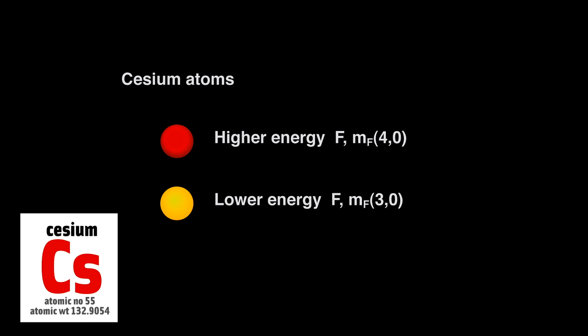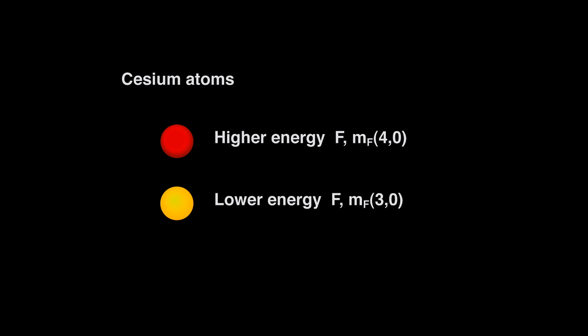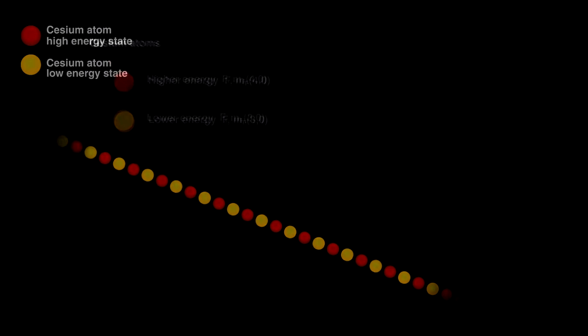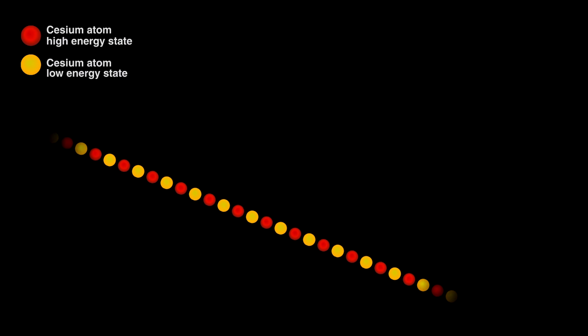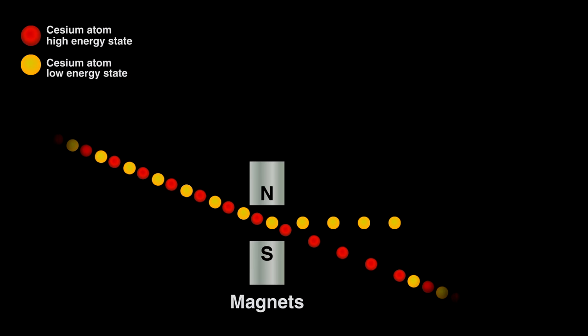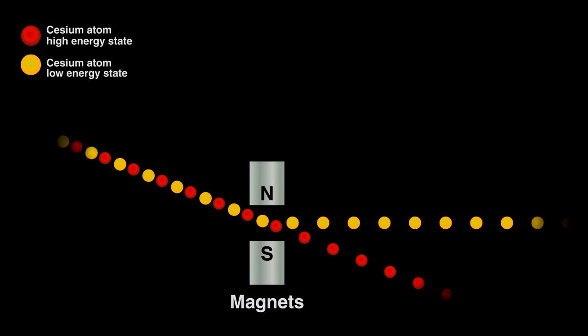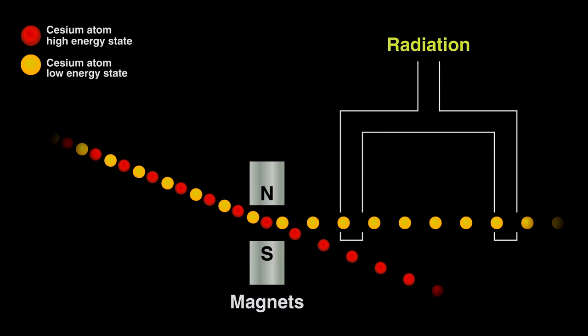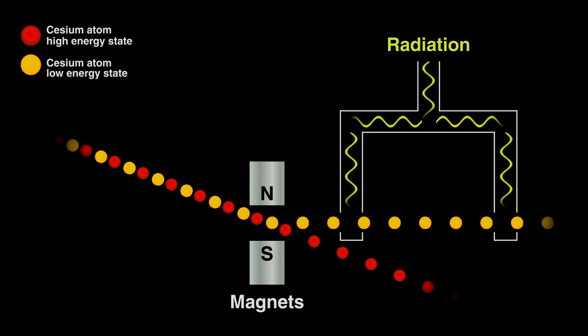The atoms in pure cesium exist mostly in two slightly different forms, a low energy form and one with just a bit more energy. For an atomic clock, these two states have two properties critical to making a clock. One, they can be separated by a magnet, and two, the lower energy atoms can be converted to the higher energy ones if we bombard cesium with the right radiation.